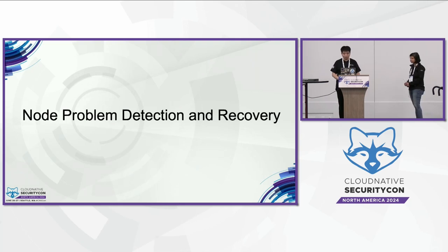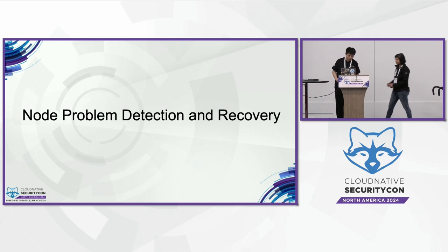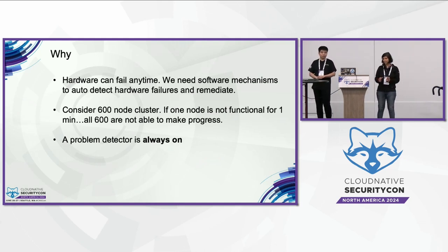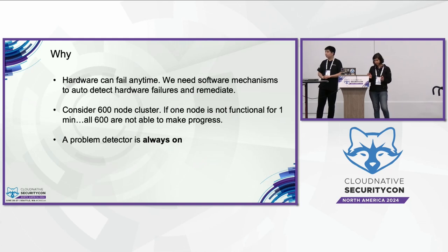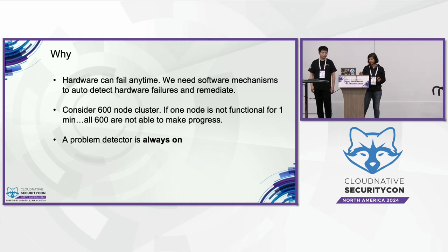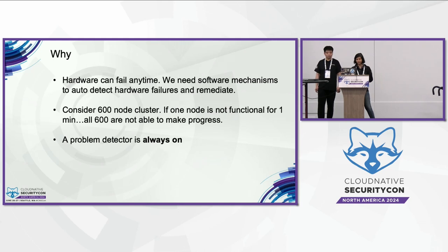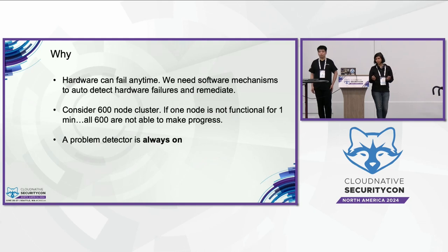Next, the second speaker will take over to introduce node problem detection and recovery. The key point is that in a training job, the job as a whole makes progress only when all of the nodes are functional. Consider an example of a 600-node cluster where one node is not functional for one minute — that's going to stall all the nodes, effectively translating to 600 minutes, or 10 hours, of stall.